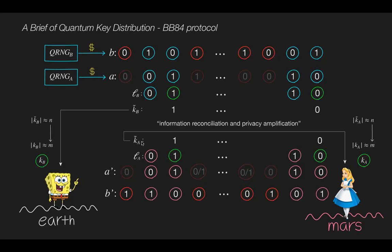Both Bob and Alice apply information reconciliation and privacy amplification on the remaining n bits to obtain m shared key bits k-b and k-a. The two steps are to remove the inaccurate bits and then reduce Eve's knowledge of the shared key to an arbitrarily small value.